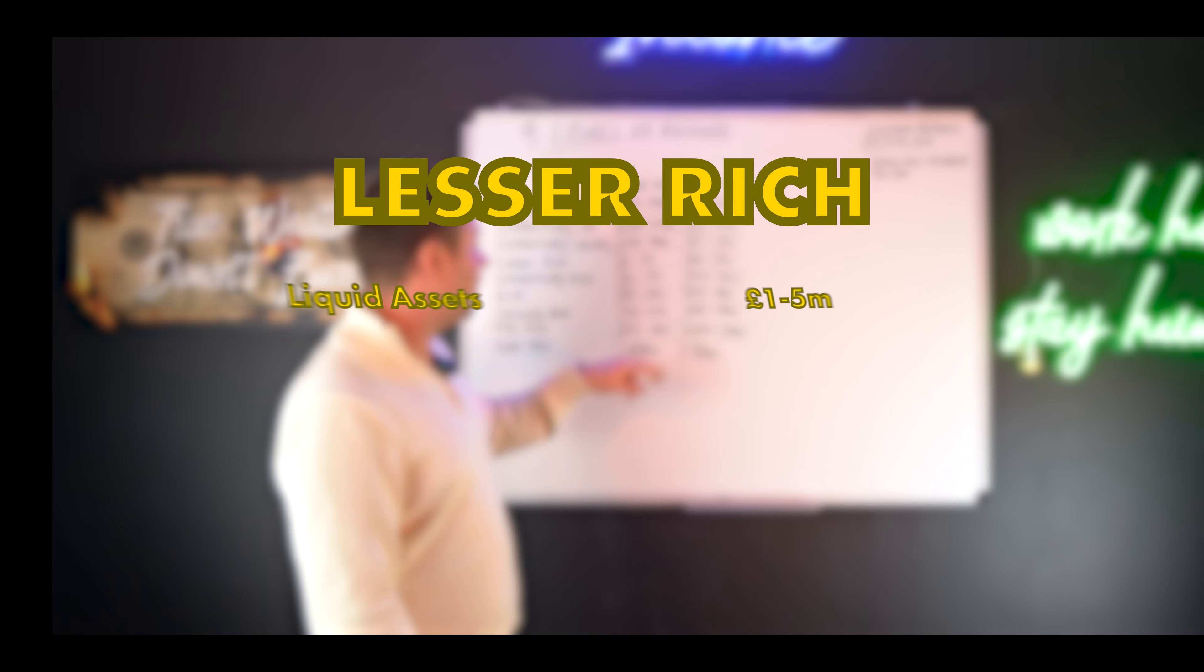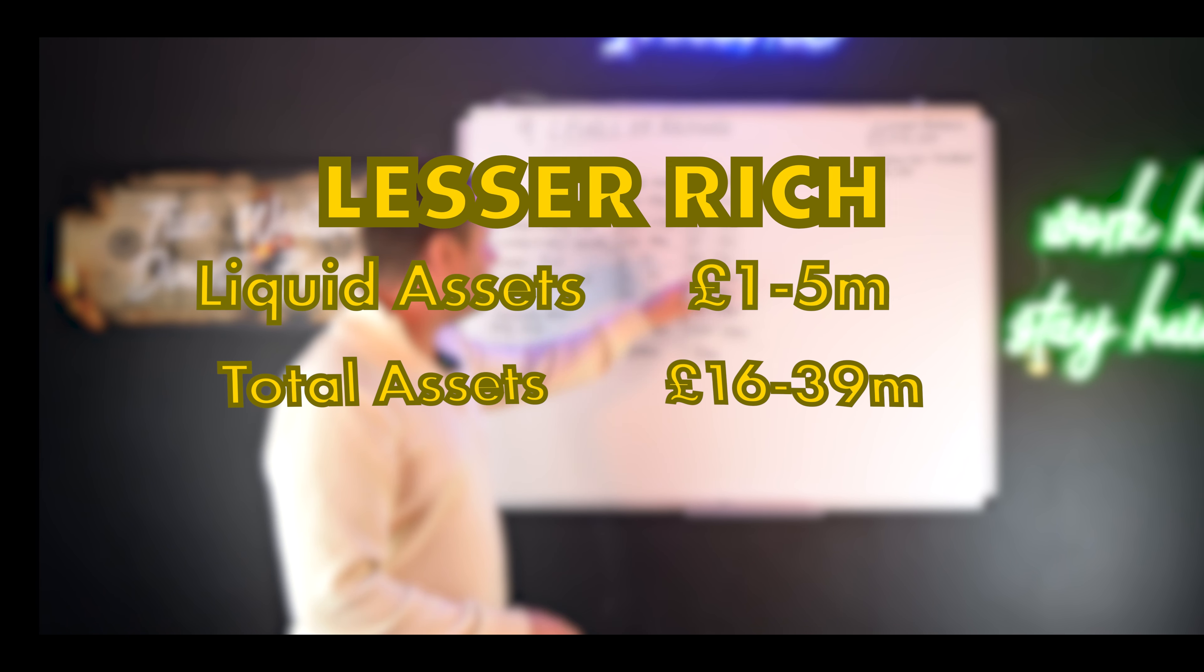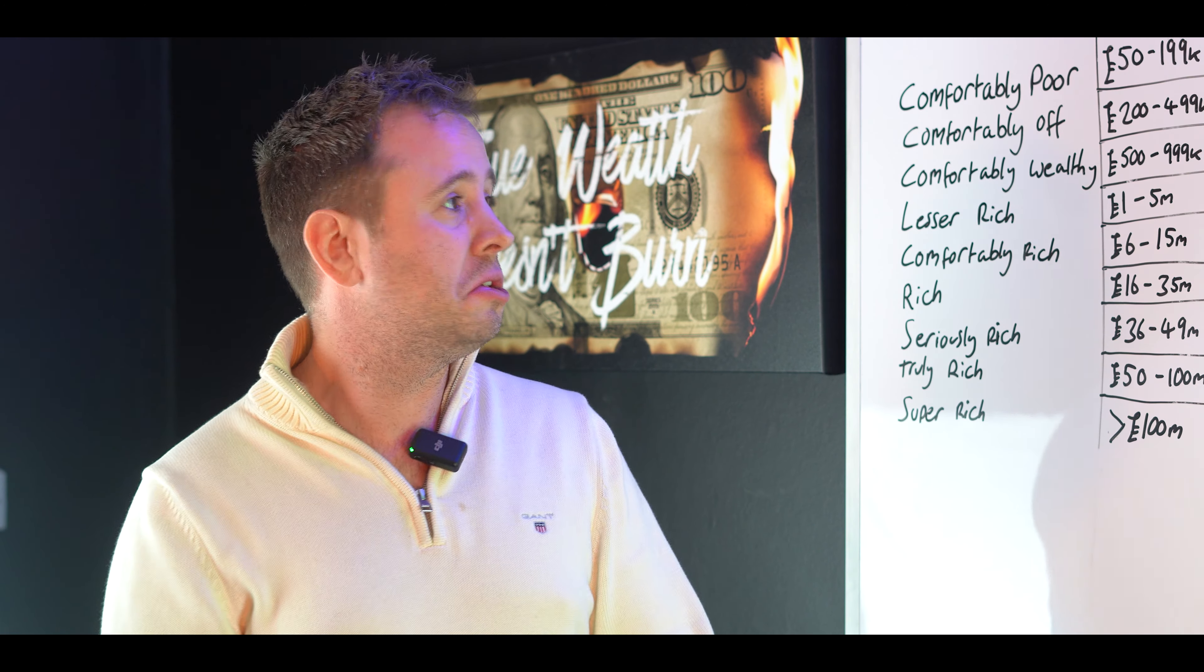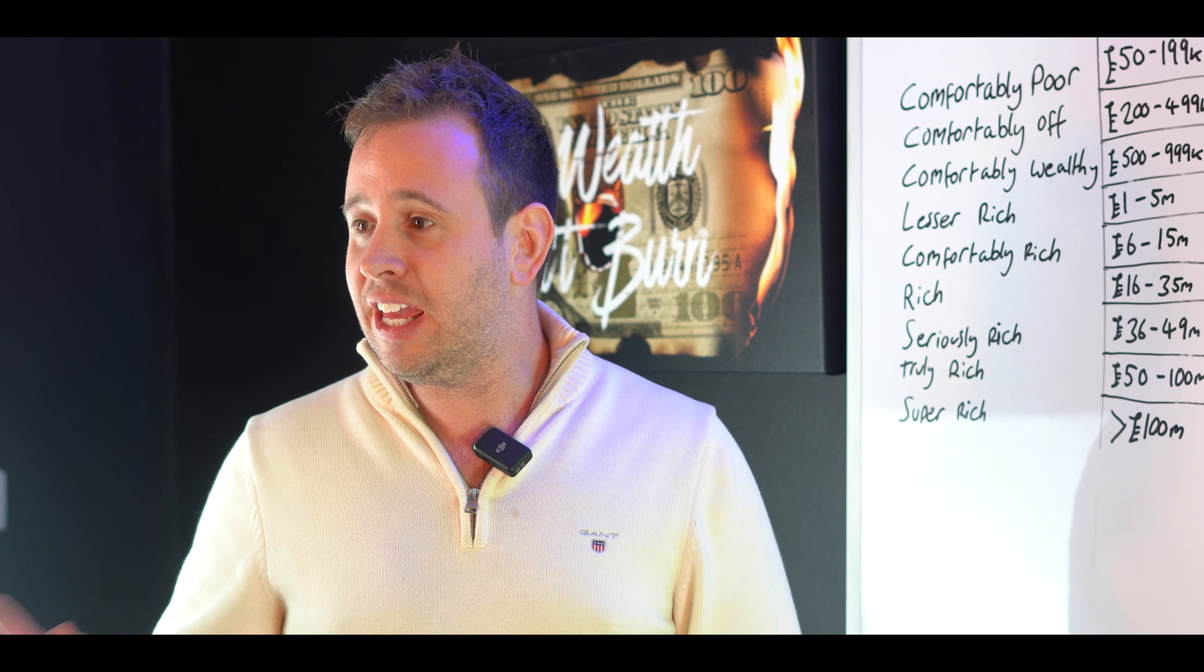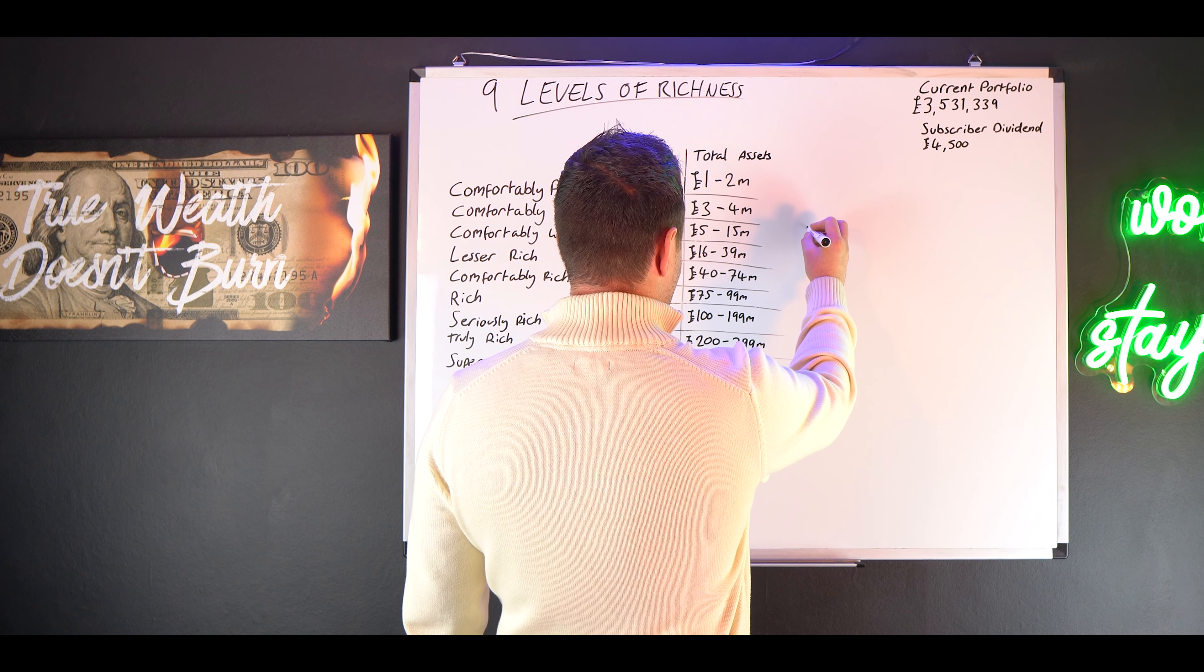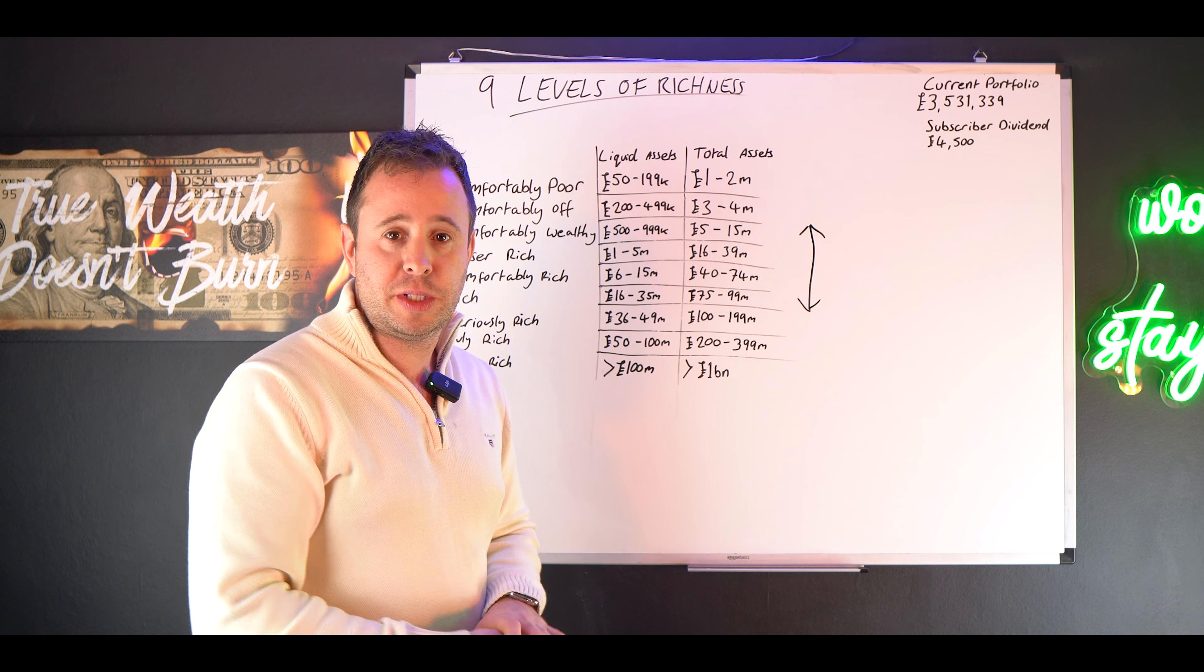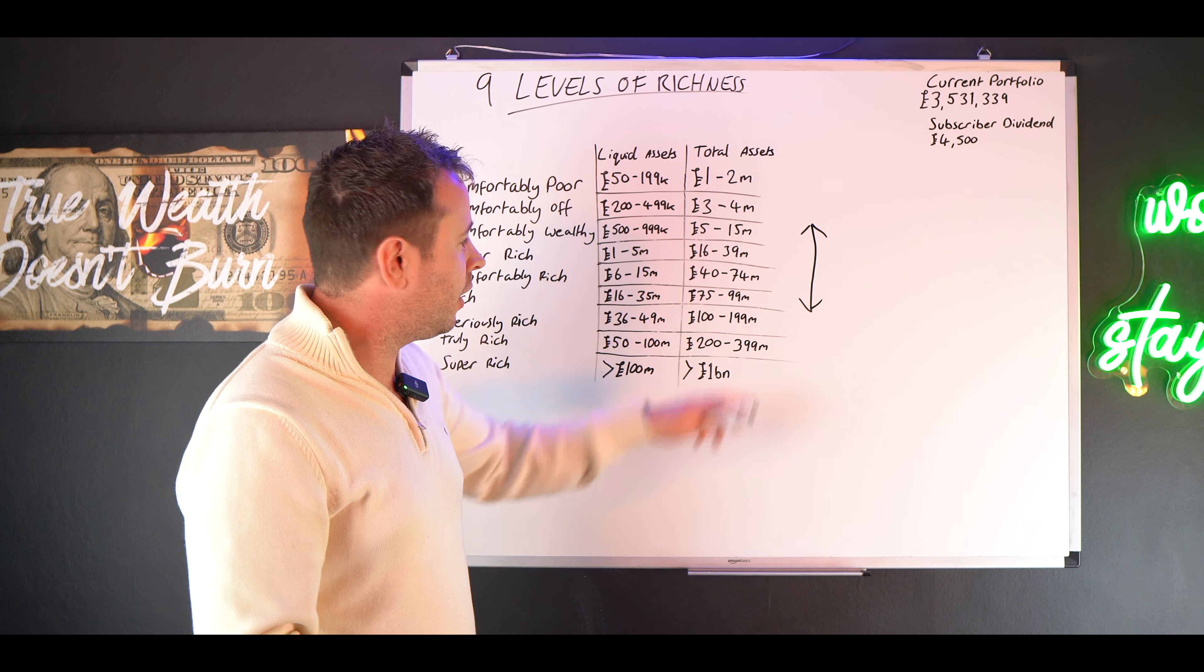So the lesser rich, 1 to 5 million in net liquid assets, 16 to 39 million in total assets. And bear in mind guys, I was speaking to a guy a couple of days ago. He's worth in the hundreds of millions, hundreds of millions, maybe billion, but certainly the late hundreds of millions. He would definitely bracket it out like this and say there's very little difference between 15 and 100 million.